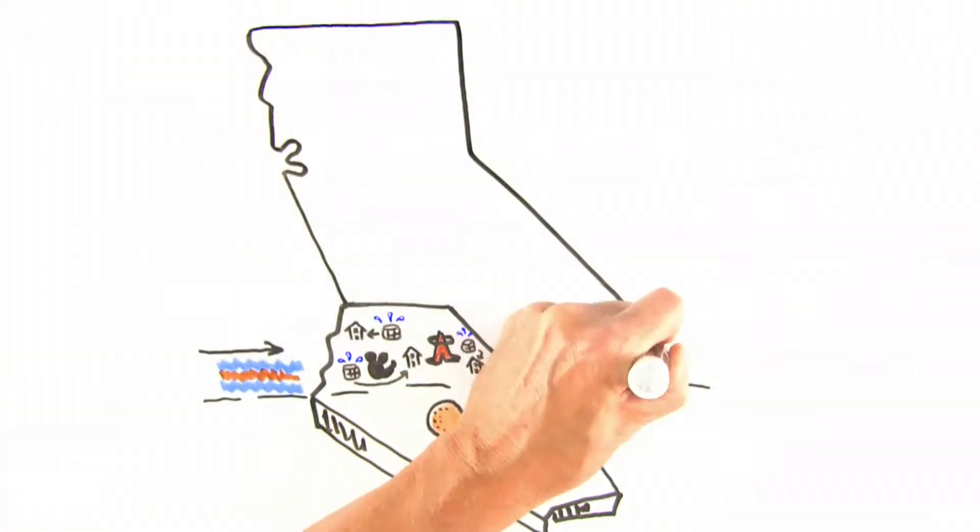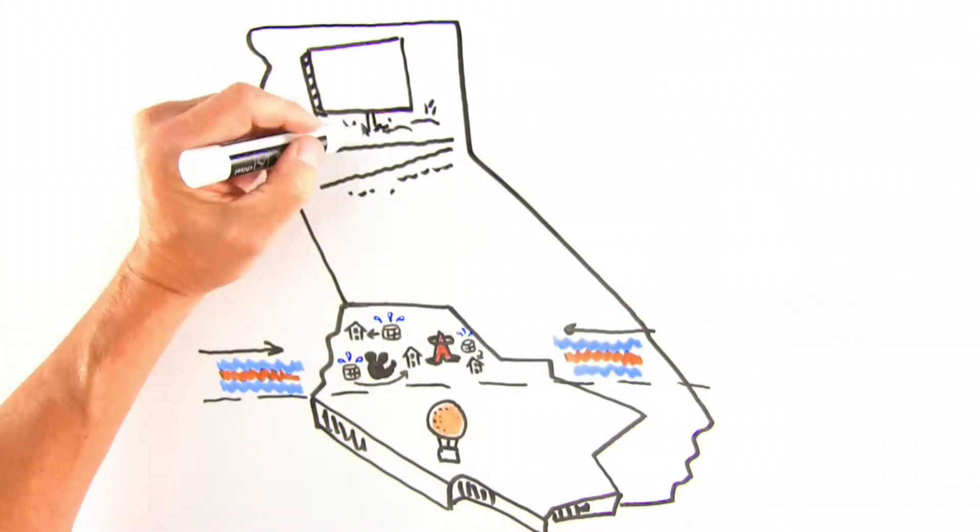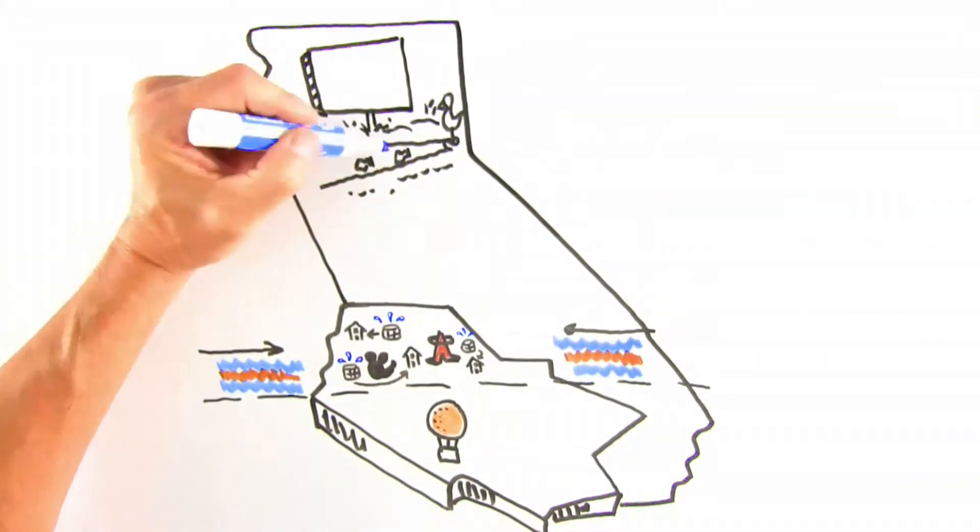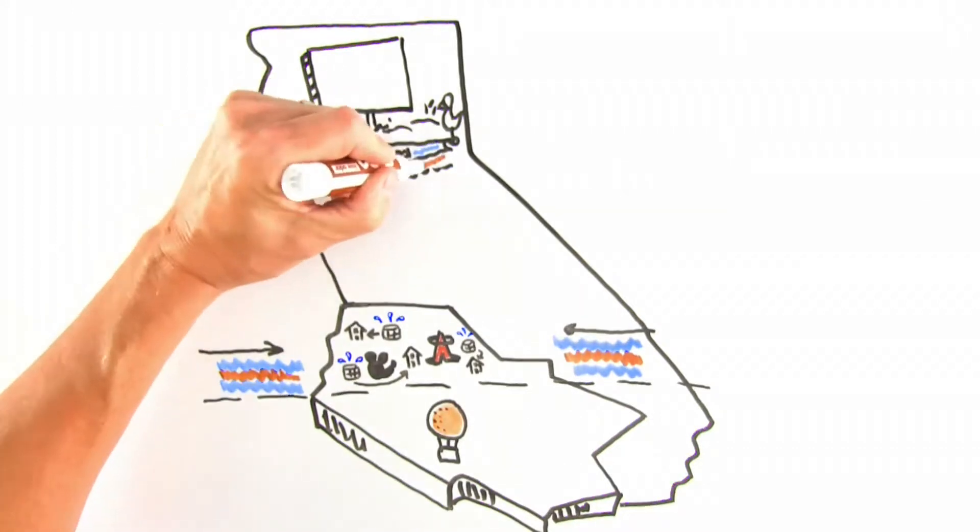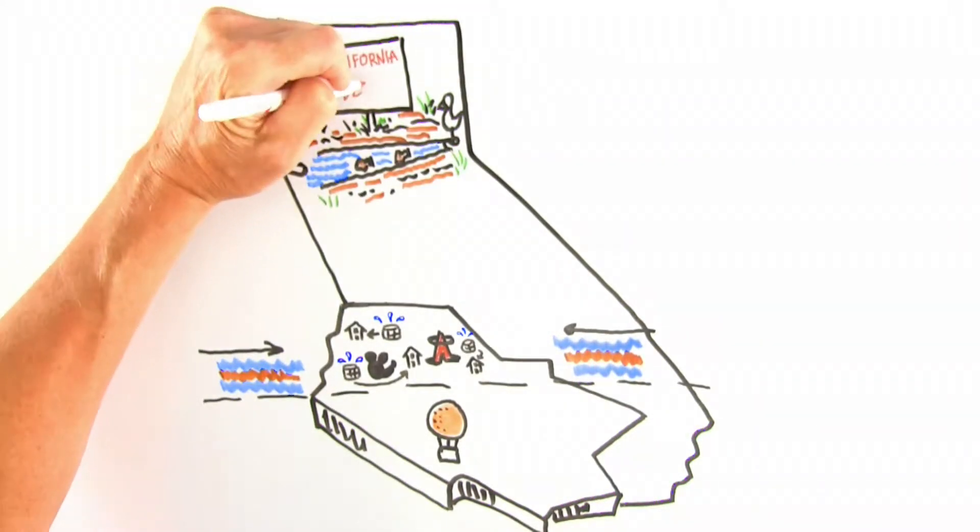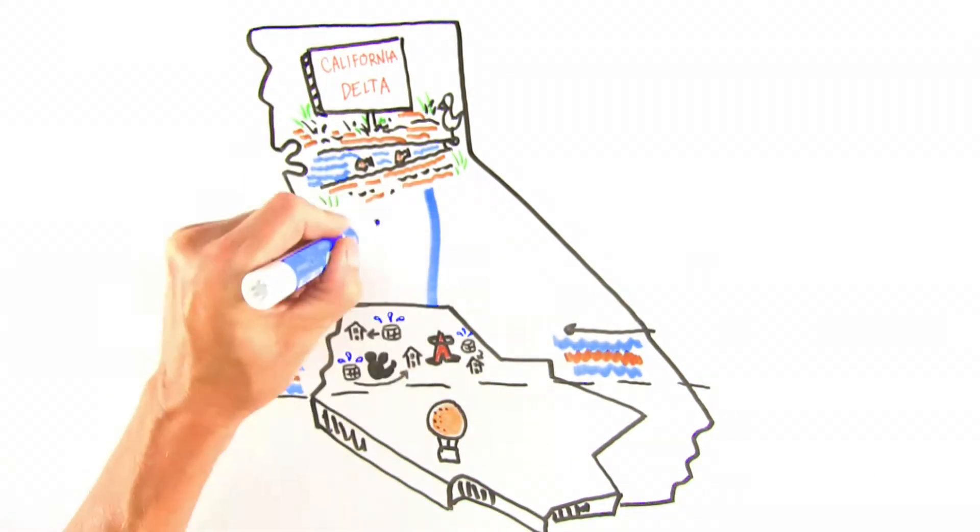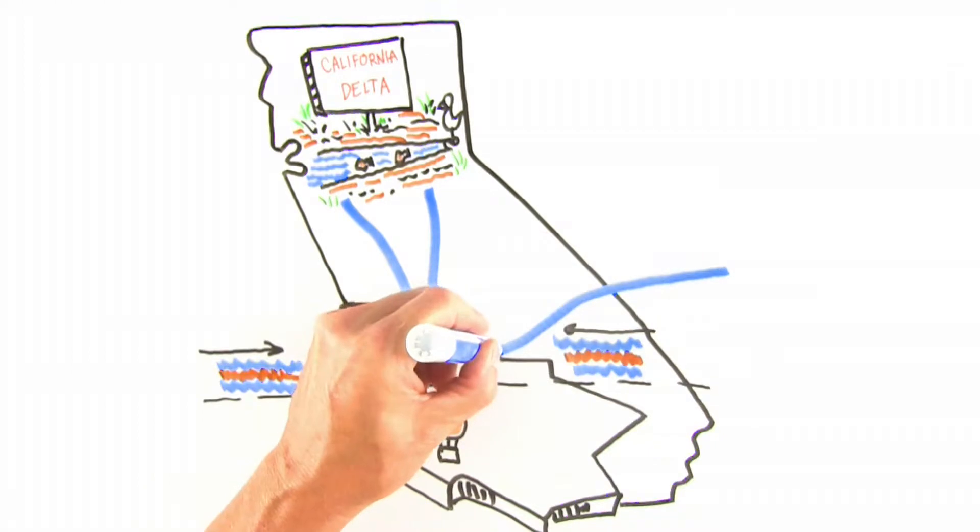Water flowing down the Santa Ana River and highly recycled water from the Orange County Water District's Groundwater Replenishment System refill the basins, but even that's not enough. The area relies on water imported from Northern California and the Colorado River for 25% of its supply.